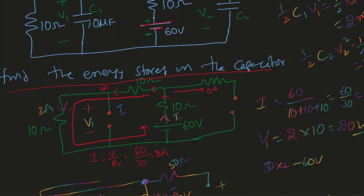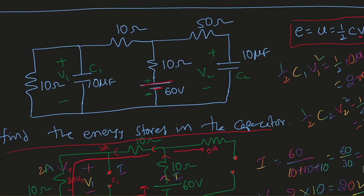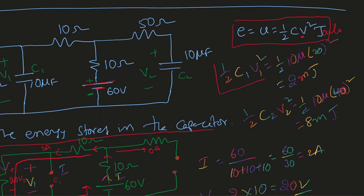So 2 amperes of current is passing through this circuit. The voltage drop across one resistor will be 2 times 10, which is 20 volts. Since C1 is in parallel with that resistor, the voltage drop across C1 is also 20 volts. So the energy stored in the first capacitor is half C1 V1 squared: half times 10 micro times 20 squared = 400 divided by 2 = 200, times 10 micro = 2000 microjoules, which I can write as 2 millijoules.